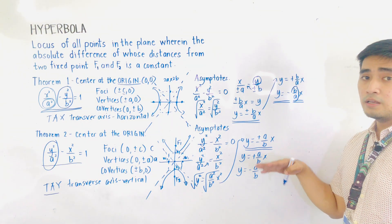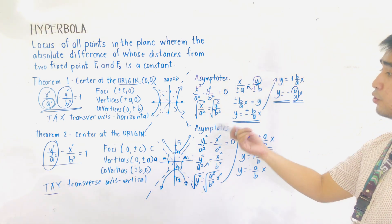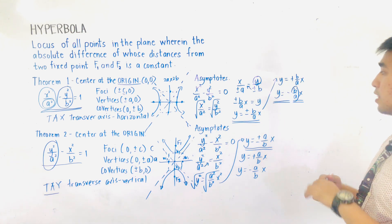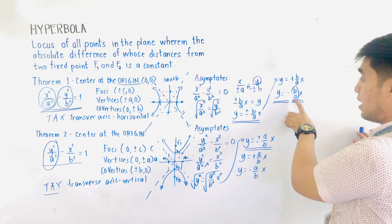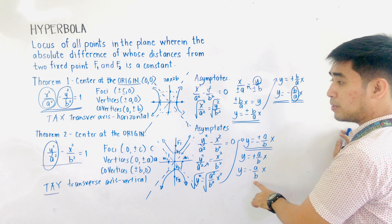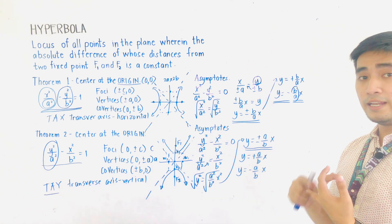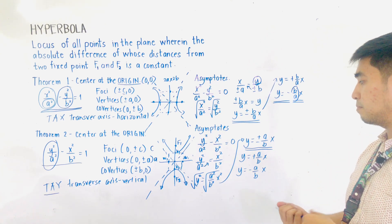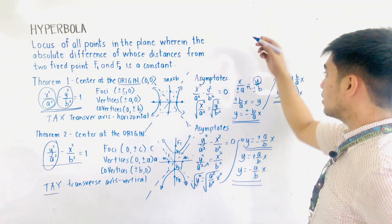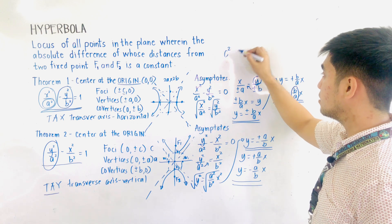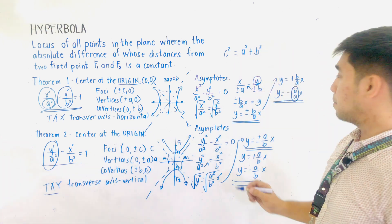To remember it easily: for theorem 1 with transverse axis horizontal, the asymptote slope denominator is a, giving b/a. For theorem 2 with transverse axis vertical, the denominator is b, giving a/b. So: horizontal → b/a; vertical → a/b. Now, how do we solve for the value of c? In order to solve for c, get c² first, and that is equal to a² plus b².